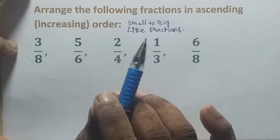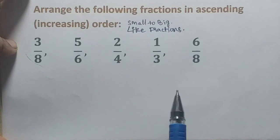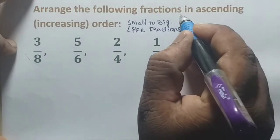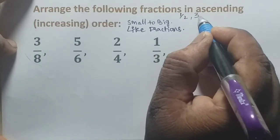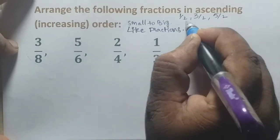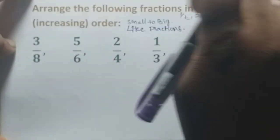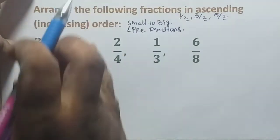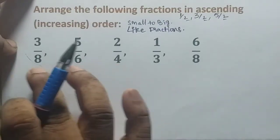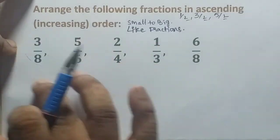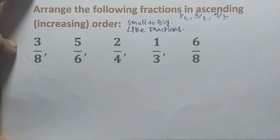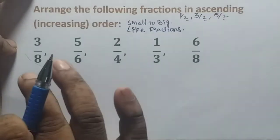Like fractions have the same denominator. For example, one by two, three by two, five by two are like fractions. When we convert unlike fractions to the same denominators, it is possible to compare them. We convert unlike fractions into like fractions to enable comparison.